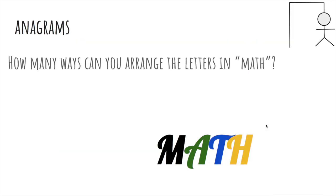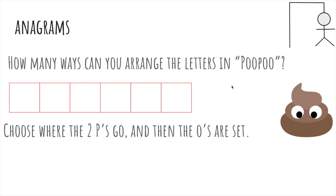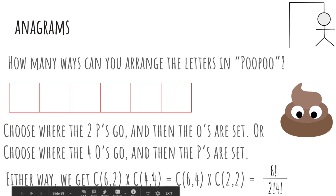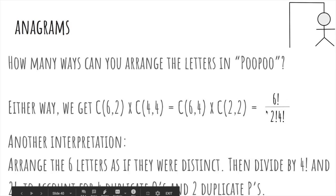Now we'll talk about how many ways we can rearrange letters. So how many ways can we rearrange the letters in math? Well, there's four factorial ways because they're distinct objects. But if I wanted to arrange letters in poo-poo, let's see. So we can choose where the two p's go, and then the o's have to be in the remaining four spots. Or we can actually choose where the four o's go, and then the remaining p's are set. So either way, we get six choose two times four choose four, or six choose four times two choose two, which is actually just six factorial over two factorial and four factorial.